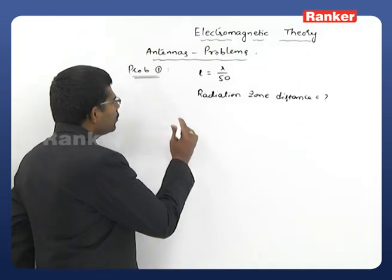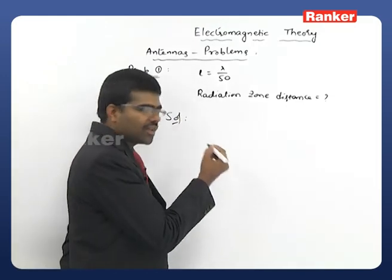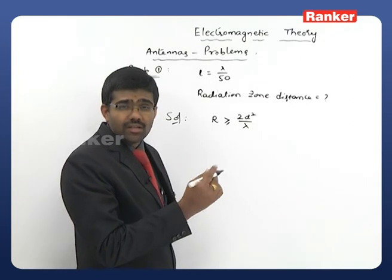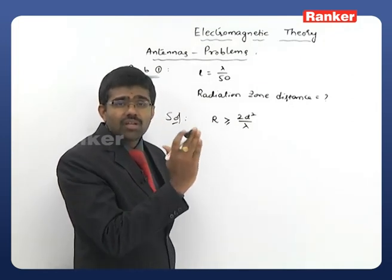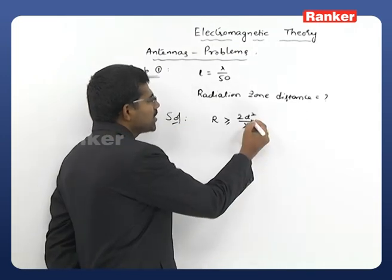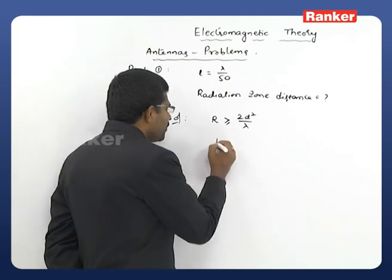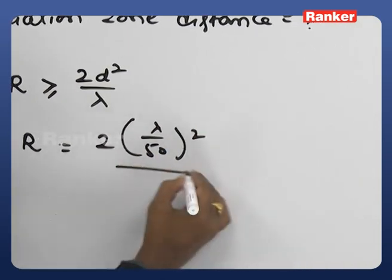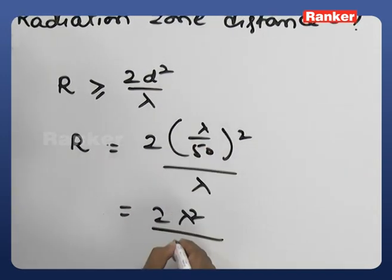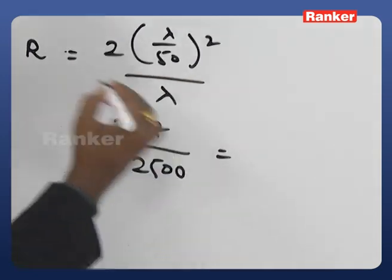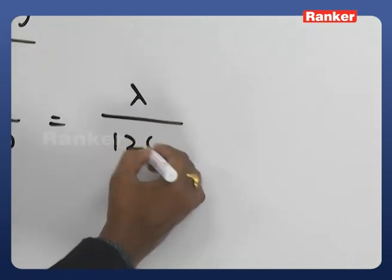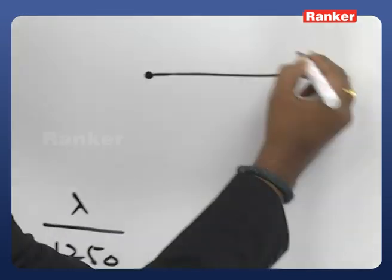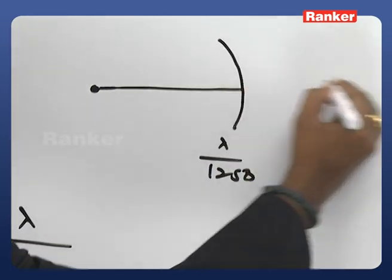For far-field measurement, the boundary is r ≥ 2d²/λ, where d is the largest dimension of the antenna. Here d = λ/50. Substituting, the minimum value of r = 2(λ/50)²/λ = 2λ²/2500λ = λ/1250. So from a distance of λ/1250 onward, everything can be treated as far field.